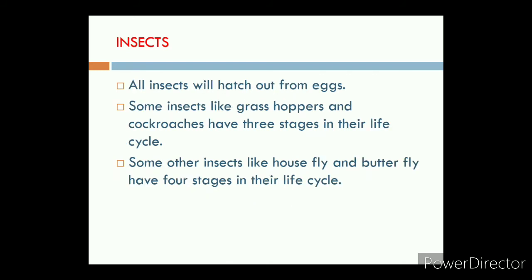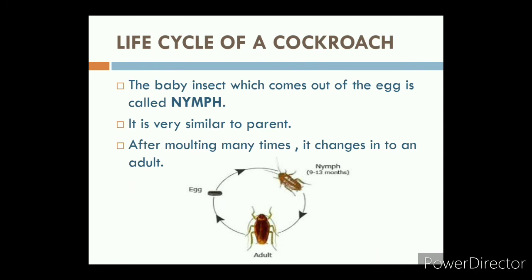Next, insects. All insects hatch out from eggs. Some insects like grasshoppers and cockroaches have three stages in their life cycle. Some other insects like housefly and butterfly have four stages in their life cycle. Let us see the life cycle of a cockroach. The baby insect which comes out of the egg is called a nymph. It is very similar to the parent. After molting many times, it changes into an adult. The first stage is egg, the second stage is nymph, and the final third stage is adult cockroach.